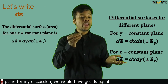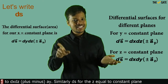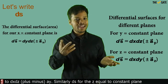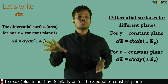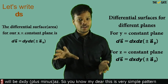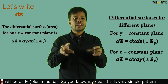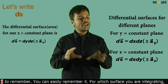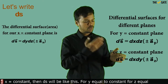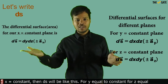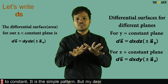Therefore, the differential surface for the x = constant surface is ds = dy·dz·(±ax). Similarly, for a y = constant plane, ds = dx·dz·(±ay), and for a z = constant plane, ds = dx·dy·(±az). This is a simple pattern to remember: whichever coordinate is constant for the surface you are integrating over, the unit vector is in that coordinate's direction, and ds is the product of the other two differentials.